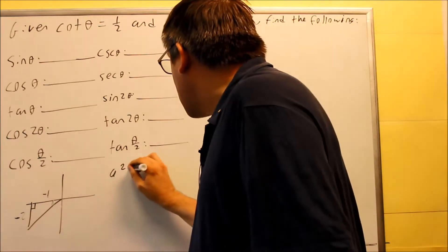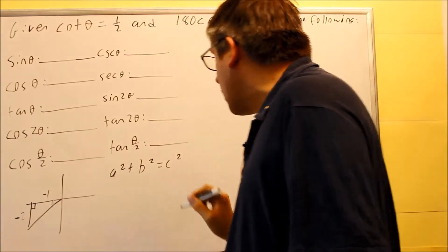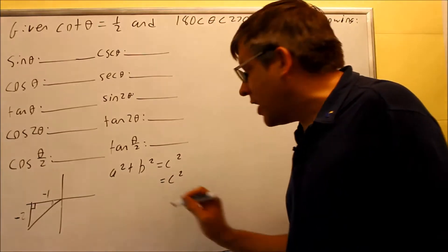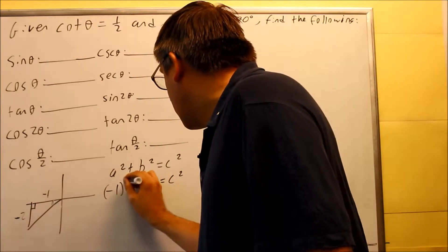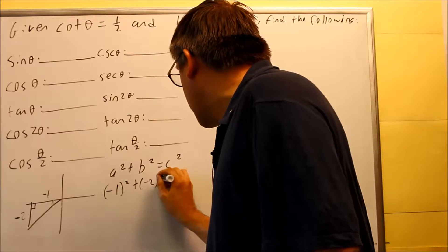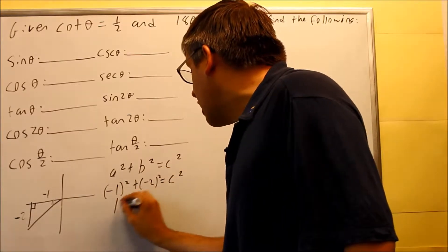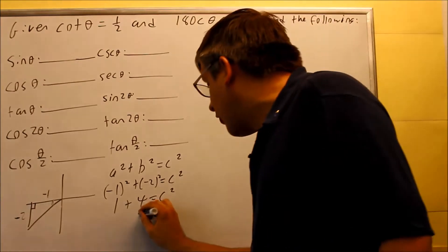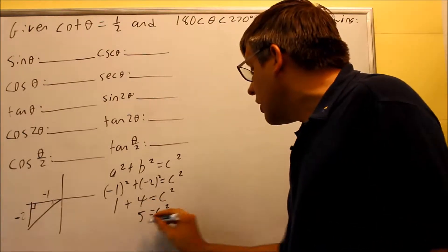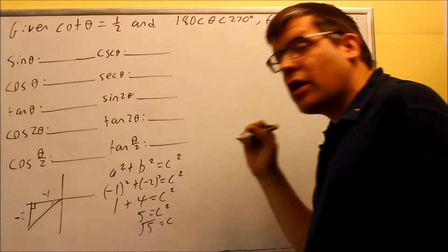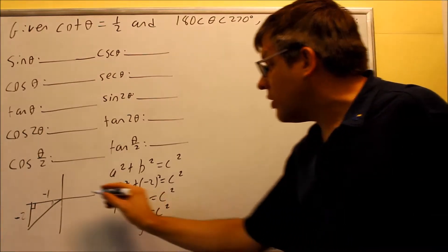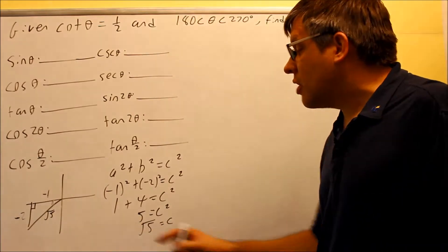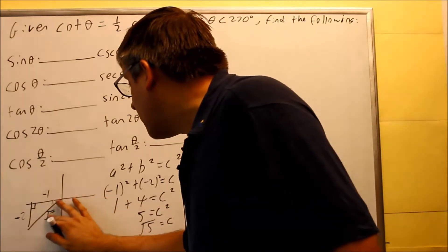Now we're ready to do a squared plus b squared equals c squared, and c is what we're trying to find. I have negative 1 squared plus negative 2 squared. When I square both of those, I get 1 plus 4 equals c squared, or 5 for c squared. Taking the square root — because I'm talking about the hypotenuse, that's going to be positive — so that's going to be root 5.